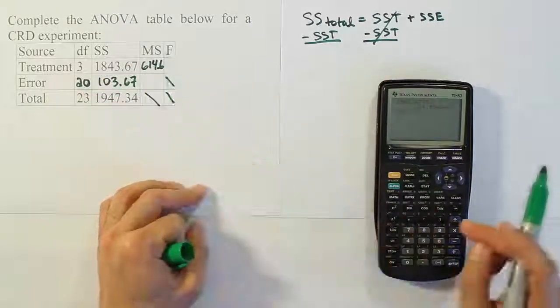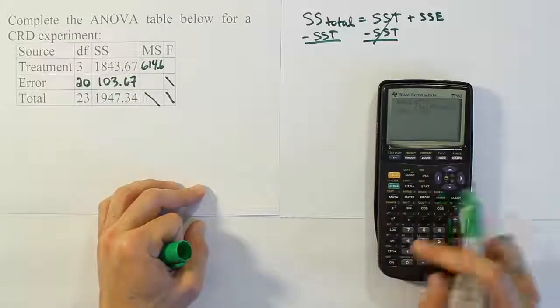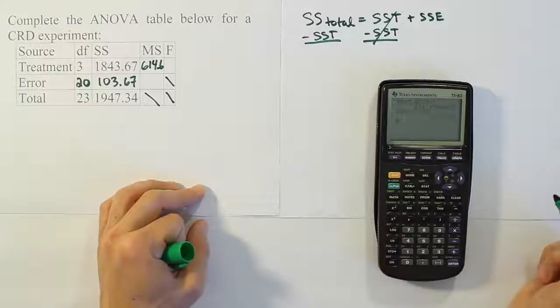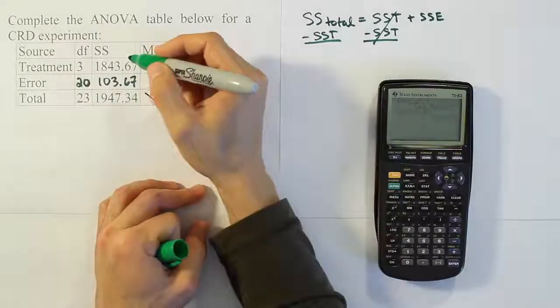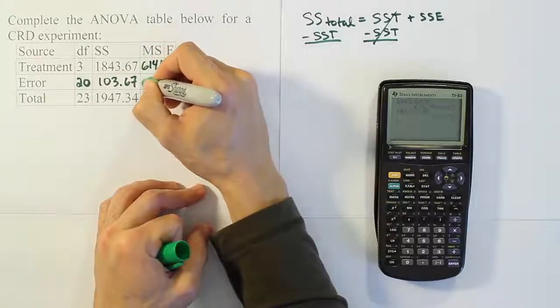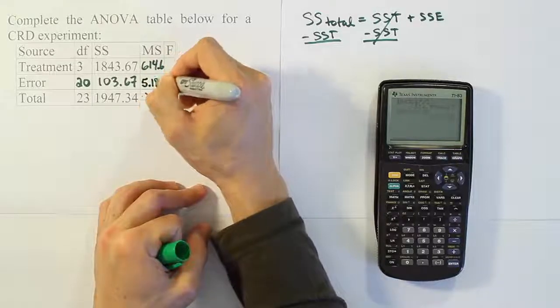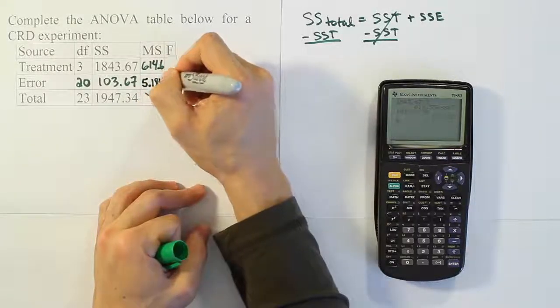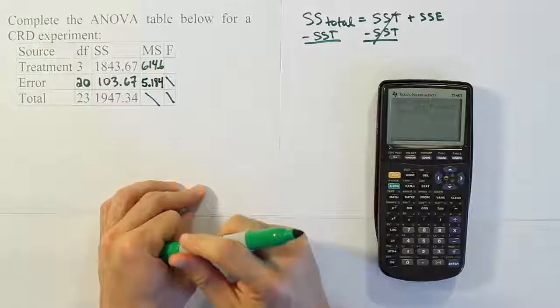So divide it by 20, and we end up with the answer 5.1835. So we'll do 5.18, 5.184, just because we don't have room to go further to the extra decimal place.